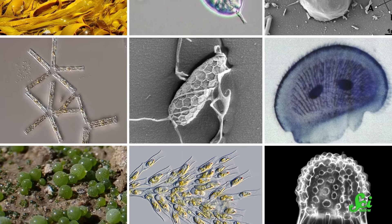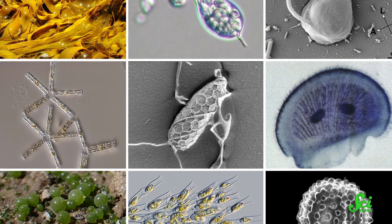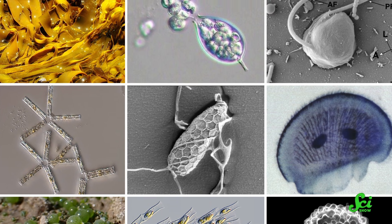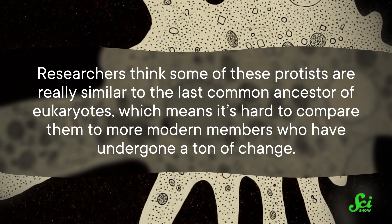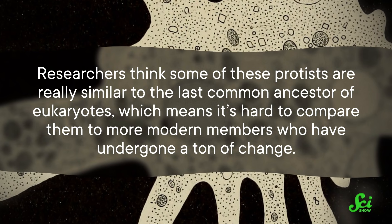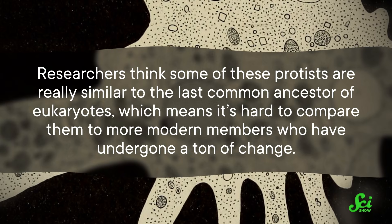Some of these new organisms were truly wild. Some were gliding single cells with two tails, some were swimming amoebas, and some even had cells covered in hard scales. But all these new protists had to go somewhere in the tree. And when they were first discovered, scientists thought these protists didn't fit anywhere in the supergroups. Eventually, after some more analysis, some of these newfound eukaryotes made their way into existing supergroups, but some were still left on their own. Researchers think some of these protists are really similar to the last common ancestor of eukaryotes, which means it's hard to compare them to more modern members who have undergone a ton of change. But if we do figure out where they fit, it would mean a better understanding of how early eukaryotes evolved.